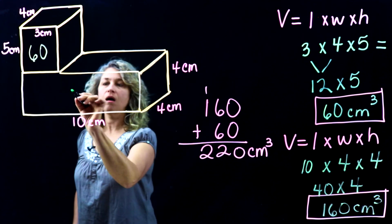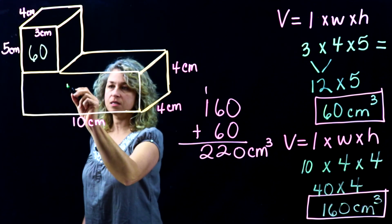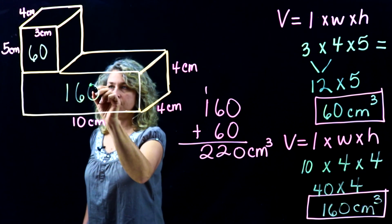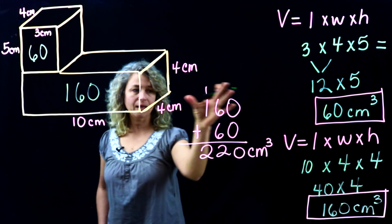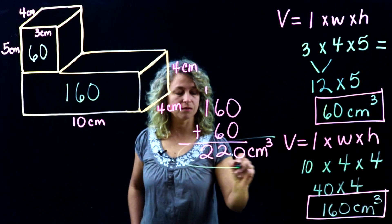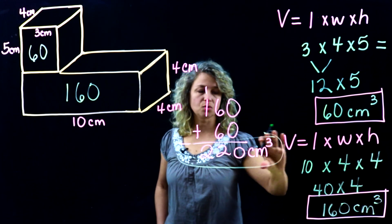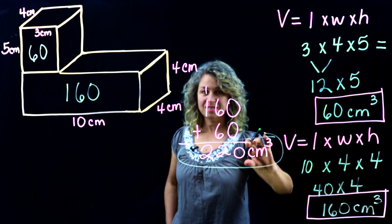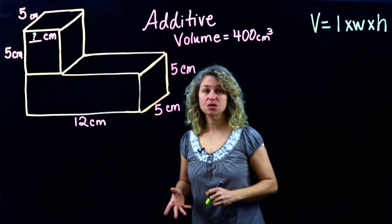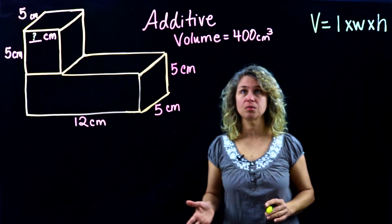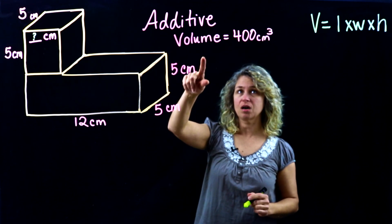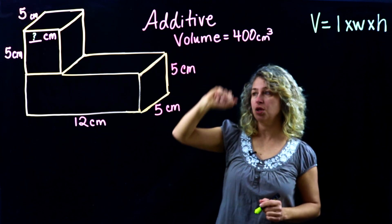We get the additive volume of 220 centimeters cubed. To recap: the volume of the first shape is 60, the volume of the second shape is 160, and when we add these together we get the additive volume of 220 centimeters cubed.